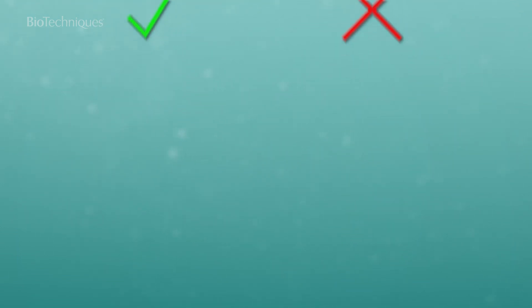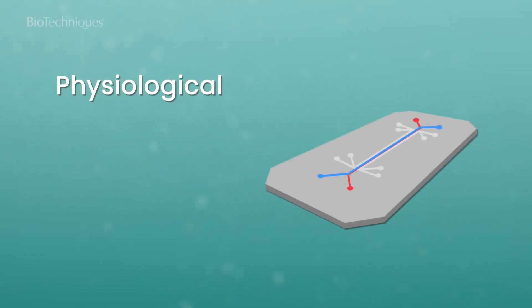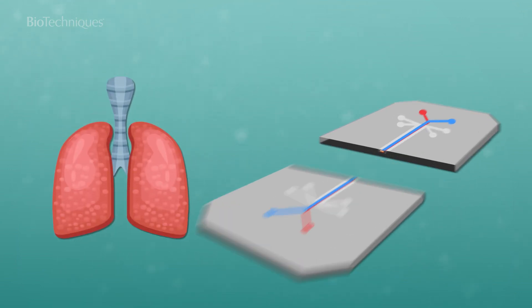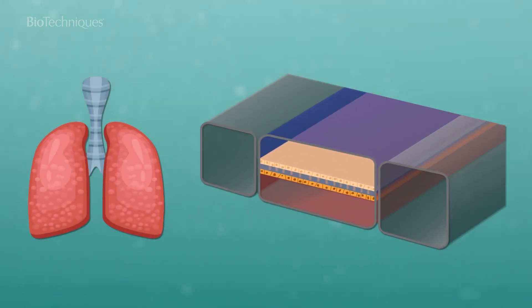This is where organ-on-a-chip, or OOC technology, comes in. OOC devices are micro-engineered systems that replicate the physiological, biochemical and mechanical properties of human organs. These micro devices are composed of a clear flexible polymer that contains microfluidic channels lined with living human organ cells and human blood vessel cells.